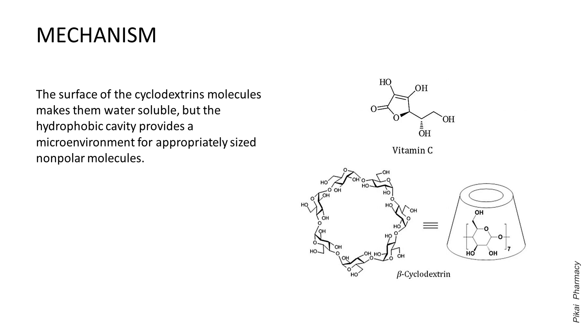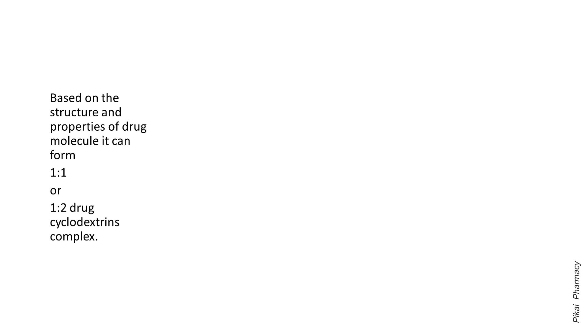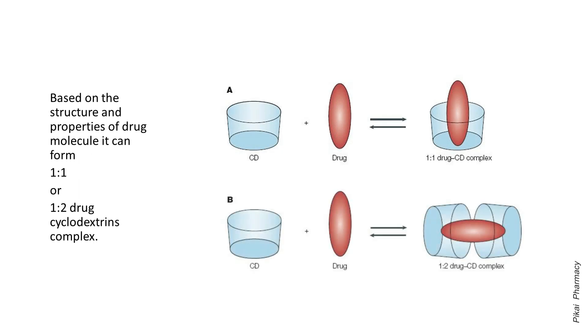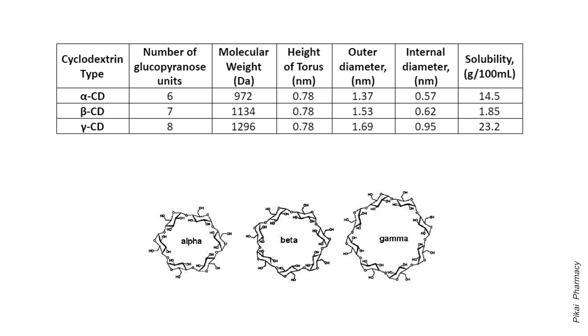Based on the structure and properties of the drug molecule, it can form 1:1 or 1:2 drug-cyclodextrin complexes. There are three naturally occurring cyclodextrins: α-cyclodextrin with six-member sugar ring, β-cyclodextrin with seven-member sugar ring, which is less irritating than α-cyclodextrin after intramuscular administration, and γ-cyclodextrin with eight-member sugar ring.